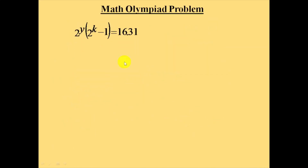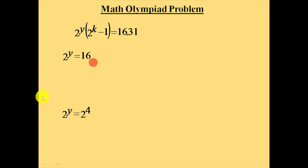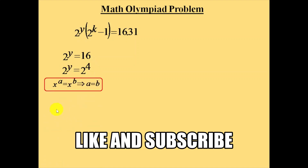Now take the equation 2 power y into (2 power k minus 1) equals 16 into 31. So 2 power y equals 16. Write 16 as 2 power 4. Since the bases are equal, the exponents must be equal, giving us y is equal to 4.